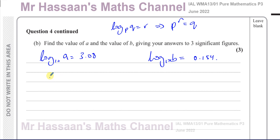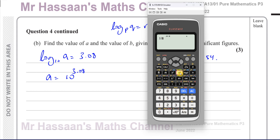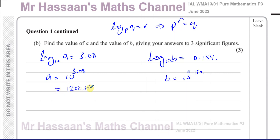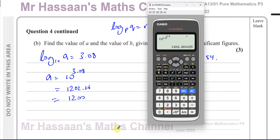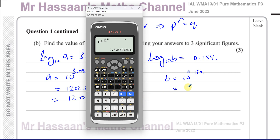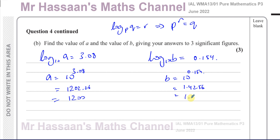So A is 10 to the power of 3.08, which equals 1202.26..., giving A equals 1200 to 3 significant figures. And B is 10 to the power of 0.154, which equals 1.4256..., giving B equals 1.43 to 3 significant figures.